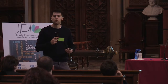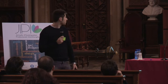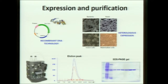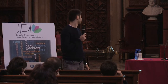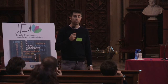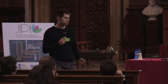Now let's move to what we do practically. We start by cloning the gene of interest. We express it normally in Escherichia coli, which is bacteria, but for specific cases we use eukaryotic hosts. Then, after expressing the protein, we set up an optimized protocol to have a pure protein and a homogeneous sample. This step is crucial to crystallizing.